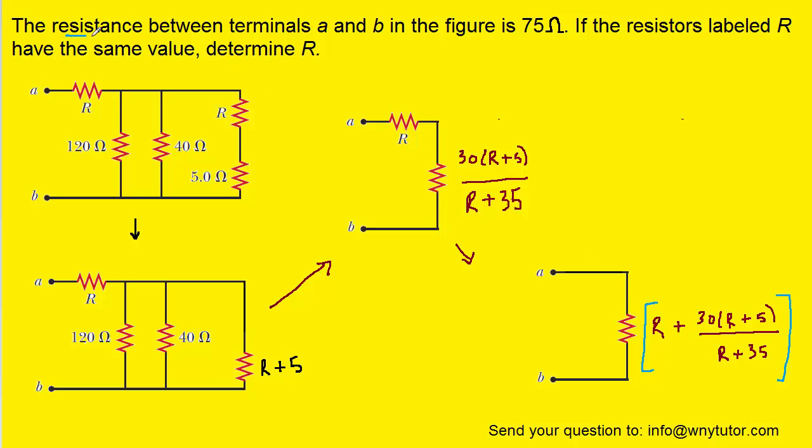This is the total resistance of the circuit. The question notes that the total resistance of the circuit is 75 ohms. I think if you go back to the beginning of the video, that the symbol here was V. That was a typo. That should not have been 75 volts, that should have been 75 ohms. So please take note of that. So again, this is the total resistance of the circuit. What we've put in blue brackets here is also the total resistance of the circuit. We're going to set those two equal to each other.